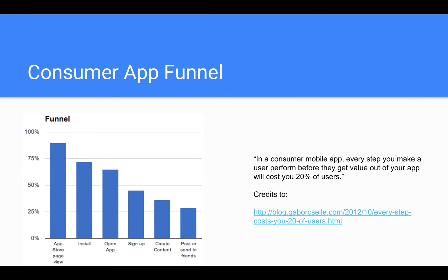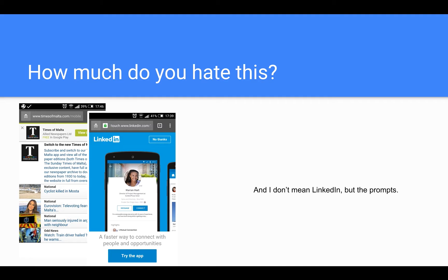Apart from maintenance challenges, with native applications you also lose out on users due to the steps involved in getting them to install. On a website, once a user is there they are already using it. With a native app, they must find it, download it, install it, open it, and then begin using it — and we've seen on our own websites that some people download an app and surprisingly never open it. Also, with Progressive Web Apps we could get rid of those annoying popups trying to push users from our website to our native app.